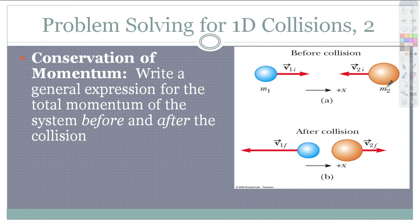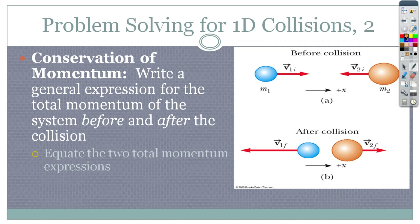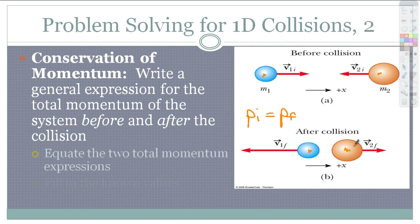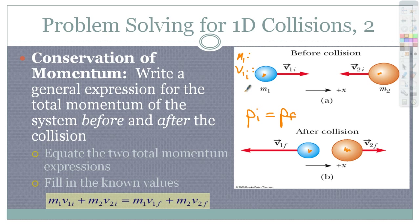Then we have to apply our conservation of momentum. We write a general expression for the total momentum before and after — we're equating these two total momentums because momentum is conserved. So the momentum before equals the momentum after. We just plug in our known values. It's a good idea to make a chart — label M1 equals whatever, V1 initial equals whatever — to see what you're missing and what you need to solve for.